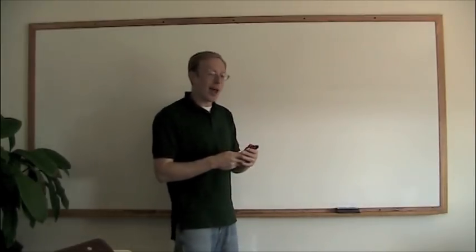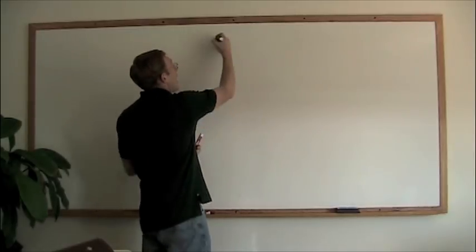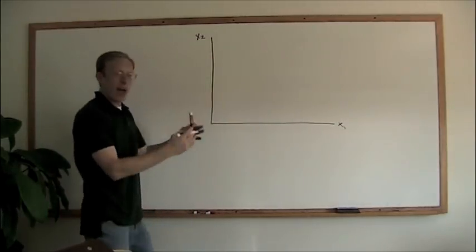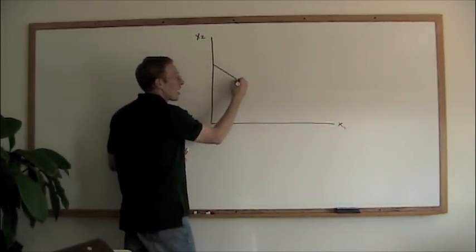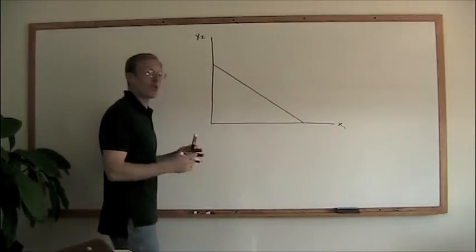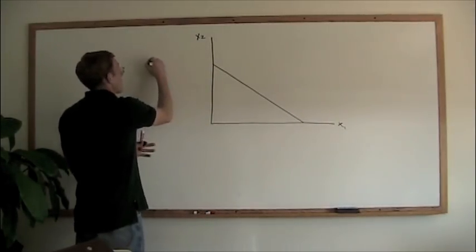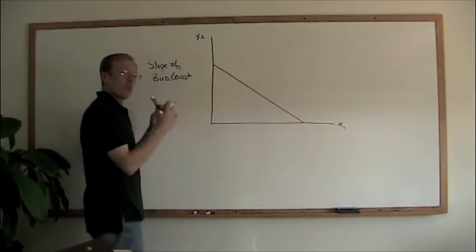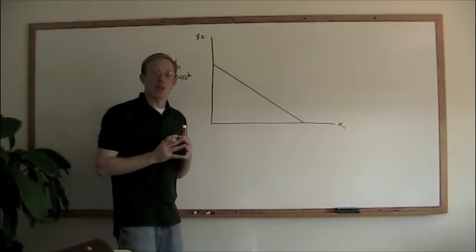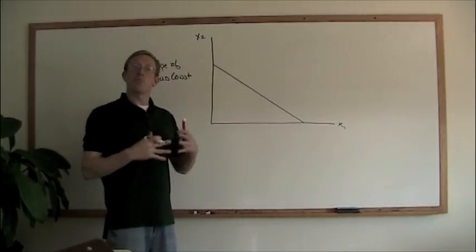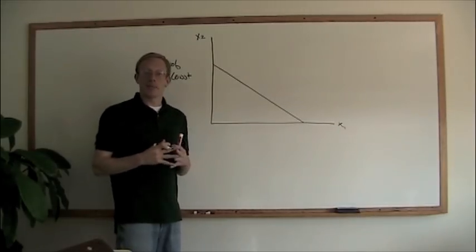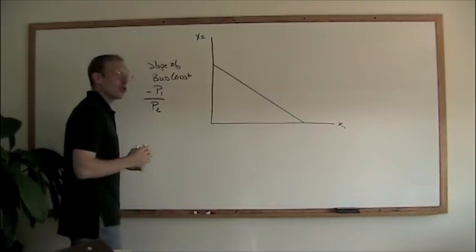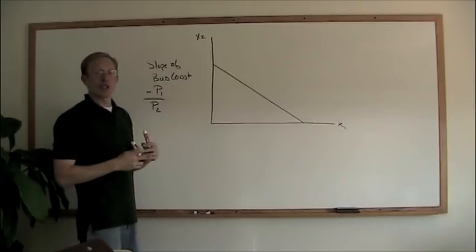To start off, let's take a look at that outcome. We have this familiar-looking graph where we have X1 and X2. Here's our budget constraint, the downward sloping curve. The slope of the budget constraint is basically our opportunity cost — it tells us the relative prices of the goods that we're looking at. In this case, the slope of the budget constraint is equal to negative P1 over P2.